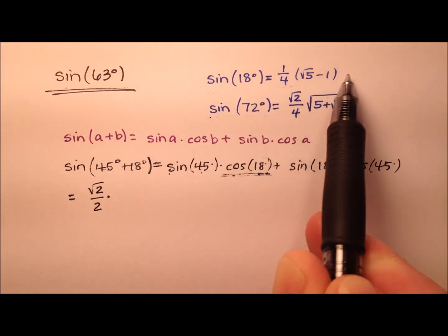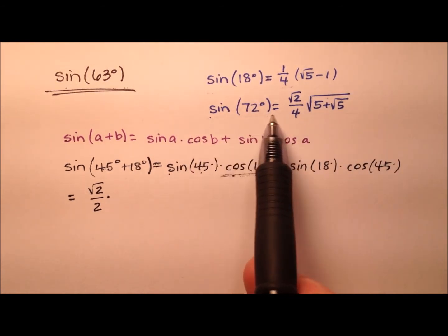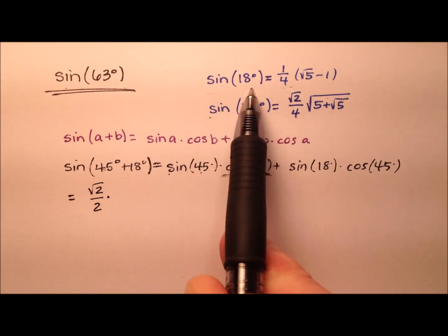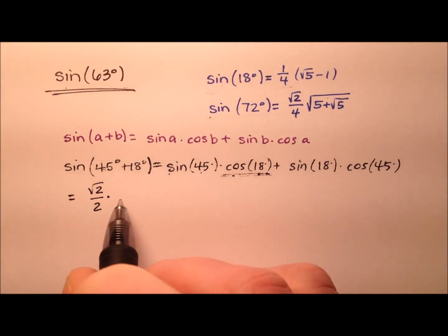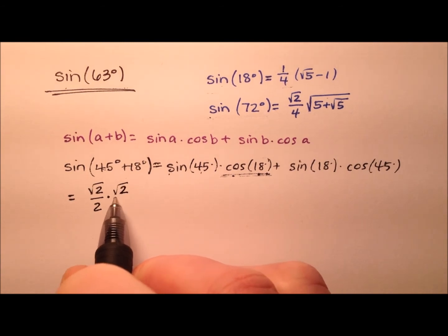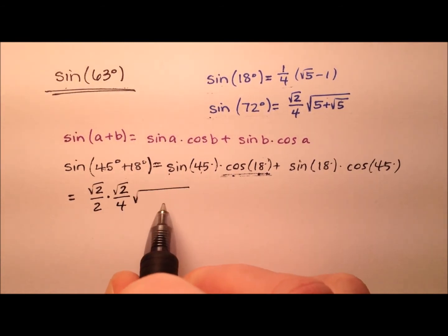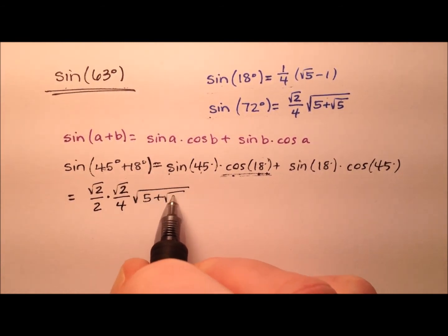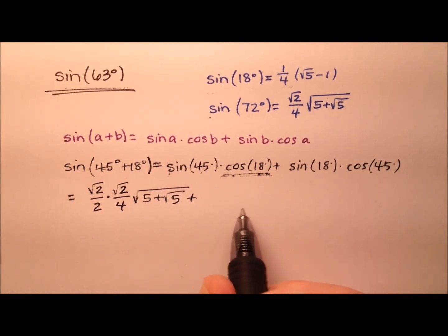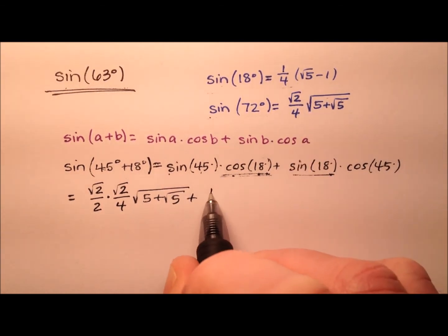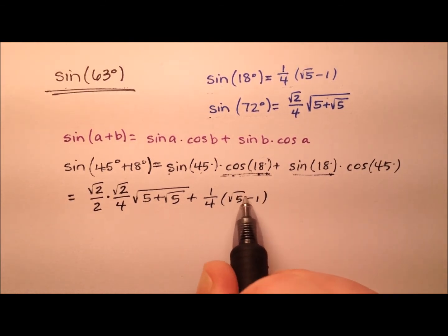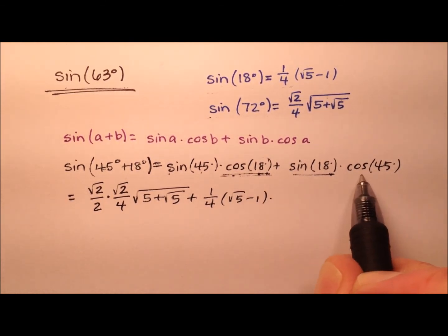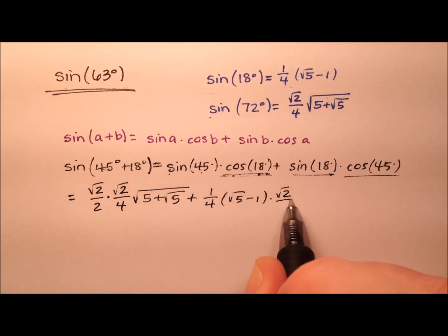The reason I did that is because I have videos for the sine of 18 and the sine of 72 worked out. So we put that in, giving us the square root of 2 over 4 multiplied by that square root expression, plus the sine of 18 degrees — which is one-fourth times the quantity the square root of 5 minus 1 — multiplied by the cosine of 45 degrees, which is the square root of 2 over 2.